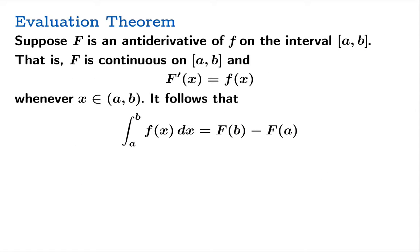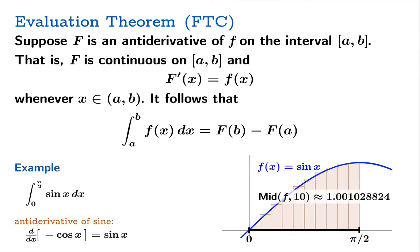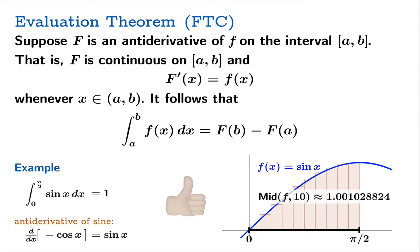This theorem is called the evaluation theorem, or what many people refer to as the fundamental theorem of calculus. For example, suppose we want the integral of sine on the interval from 0 to π/2. Here's a graph of sine; a midpoint sum with 10 divisions gives about 1, a little bit greater than 1. Applying the fundamental theorem: an antiderivative of sine is negative cosine — the derivative of negative cosine is sine. Plugging in the endpoints π/2 and 0 and subtracting, we get 1. This looks pretty reasonable.